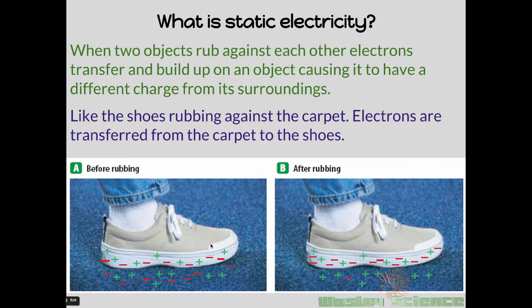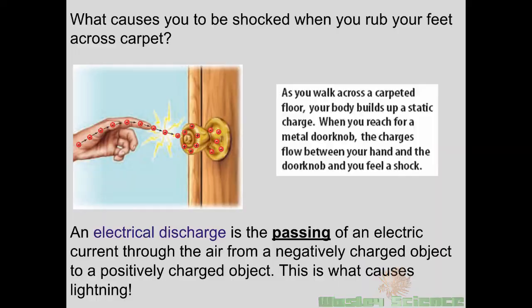After the shoe has rubbed on the carpet, the proton count stays the same at seven — when you rub your feet on a carpet you don't pull protons off, protons stay the same. But the shoe now has twelve electrons instead of seven. So there are more electrons on that person's shoe and fewer electrons on the carpet. The carpet is now positively charged because it has more protons than electrons, and the shoe is negatively charged because it has more electrons than protons.